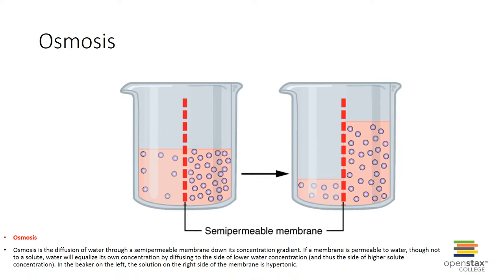Water goes from an area of high water concentration to low water concentration. Because water can freely cross the semi-permeable membrane, the water concentration is determined by the solute concentration. Water moves from the side with low solute to high solute until the concentration of solute particles per water is equivalent on both sides of the membrane.